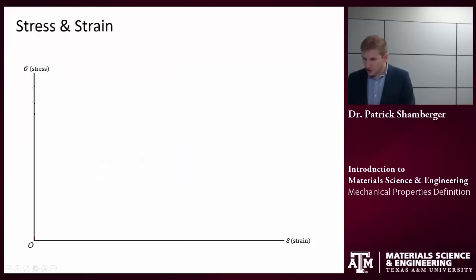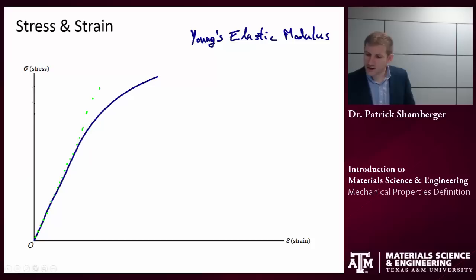One other thing that we should think about is in this elastic region. I have a nice linear region here. I can define what's called the elastic modulus. And this is a very specific elastic modulus. This is the Young's elastic modulus, or sometimes it's called the tensile elastic modulus, if I'm looking at a tensile stress-strain diagram. And so, because it's linear, we can say that stress is proportional to strain, and they're proportional by some constant that we call the Young's elastic modulus.